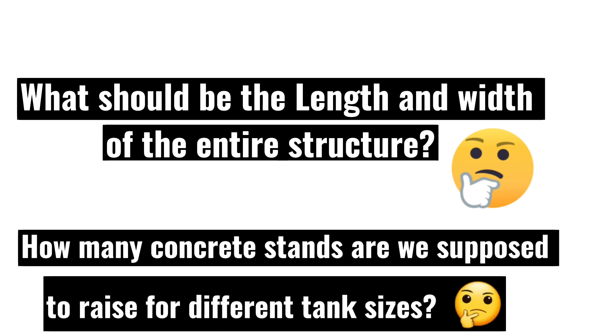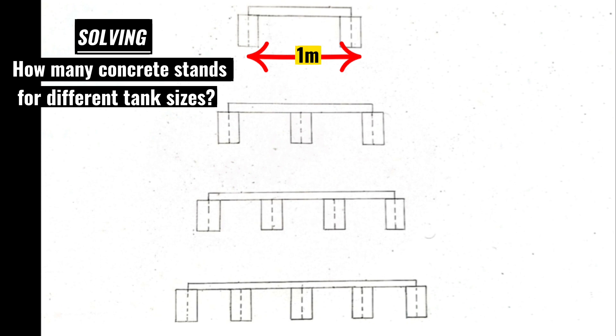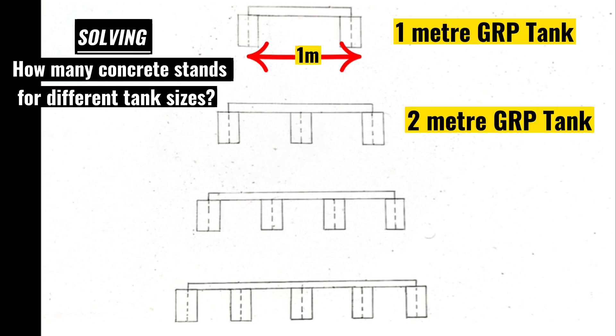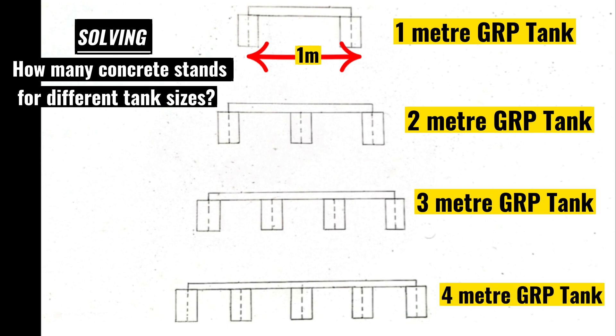The answer is quite simple. Each concrete stand should be 1 meter center to center away from the other. Therefore, if our GRP tank is 2 meters, it means we are supposed to have 3 concrete stands. For a 3 meter GRP tank, we raise 4 stands. For a 4 meter GRP tank, we raise 5 stands. As simple as that, since the spacing between each stand is 1 meter.